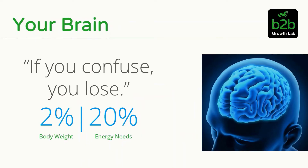Let's go back to the brain. It represents 2% of your body weight, but it actually takes up 20% of your calorie requirements. And it's hardwired to switch off if there's no tangible benefit to your survival. So if you start confusing people, you've lost them. Keep it simple — remember that 2%-20% rule. If you confuse, you lose.